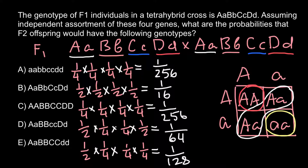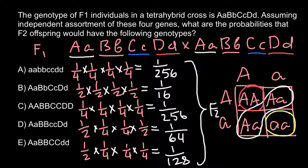So these are the probabilities for having such genotypes in the F2 generation. Of course, this is not the whole list of all probable genotypes. Now I hope you know how to solve analogous problems.